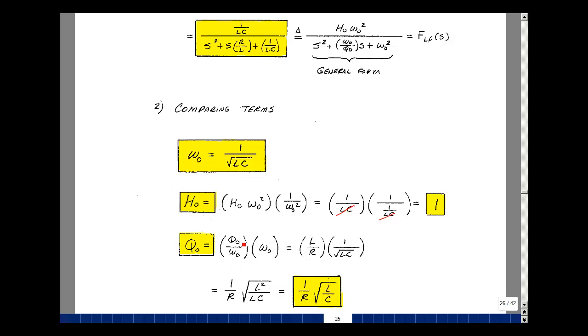So the reciprocal of omega naught over Q naught is 1 over this, which would then be L over R, and then omega naught is 1 over the square root of LC. Let me write this as the square root of L squared, and then divide it by LC. The L squared and the L cancel, and so I get 1 over R square root of L over C. So given a filter with values of R, L, and C, I can then calculate these three constants, omega naught, H naught, and Q naught.